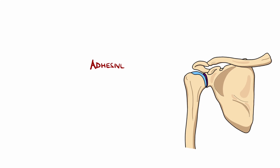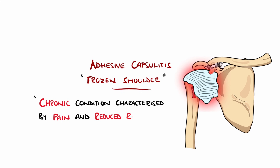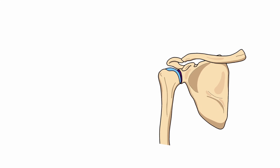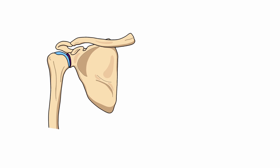Adhesive capsulitis, more commonly known as frozen shoulder, is a chronic condition characterized by pain and reduced range of motion at the shoulder. More specifically, this affects the glenohumeral joint — the joint between the humerus and the glenoid process of the scapula.